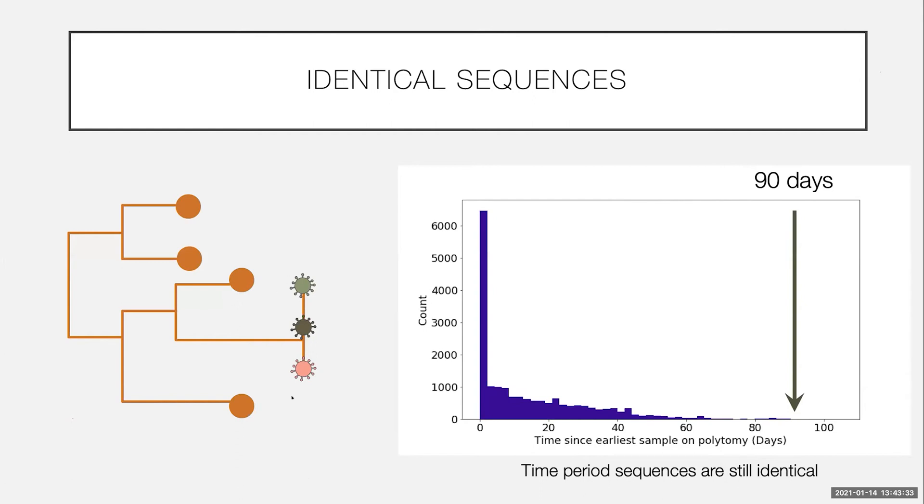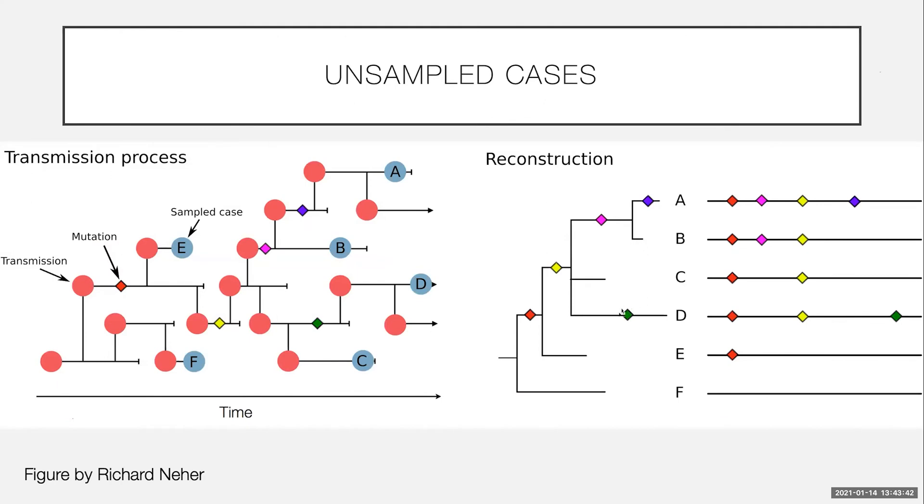So quite a lot of sequences that we have of SARS-CoV-2 are identical. And you can see here on the tree what that looks like. And this is called a polytomy. This means that we have less data to work with. So you can see that the mutations that are here, it would be easier if we had a mutation between every transmission.